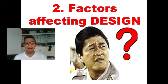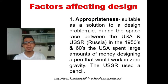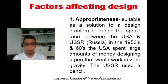Now let's proceed with the factors affecting design — the things that can be the reason for the different kinds of design. The first factor is appropriateness: being suitable as a solution to a design problem. During the space race between the USA and USSR in the 1950s and 1960s, the US spent large amounts of money designing a pen that would work in zero gravity. The USSR used a pencil.